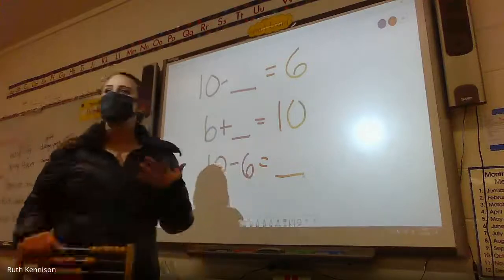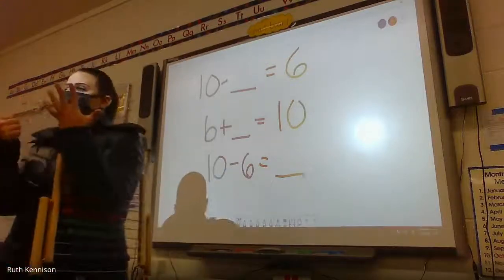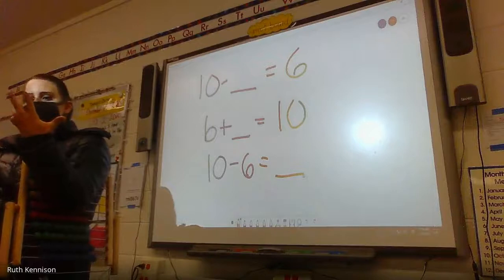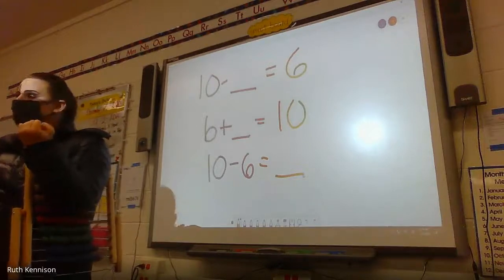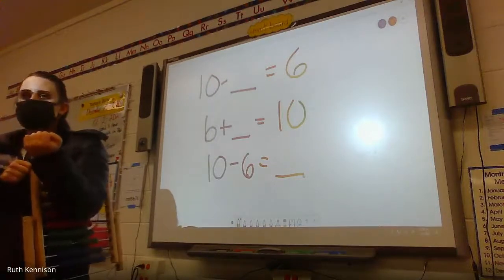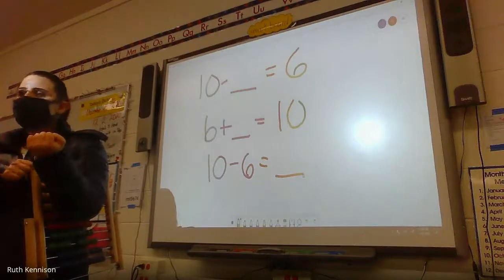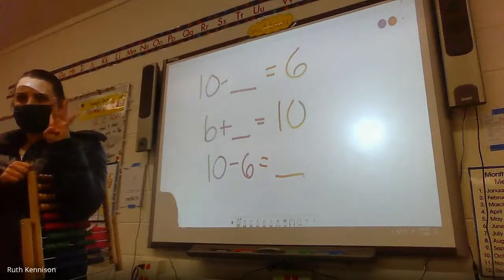We could count. Let's see. We could count back six, right? See what we land. Ten, nine, eight, seven, six, five, four. We just found like three different ways to get the answer, right? And it was always four.